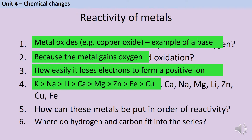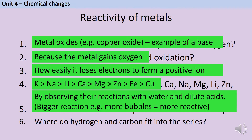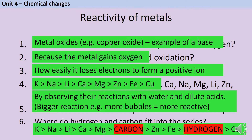We can place the metals in this order of reactivity by observing their reactions with water and with dilute acids. The more vigorously the metal reacts — for instance the more bubbles that are produced — the more reactive it is. We can also place hydrogen and carbon in this reactivity series: carbon fits in directly before zinc, and hydrogen fits in directly before copper.